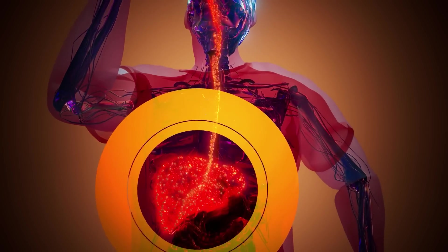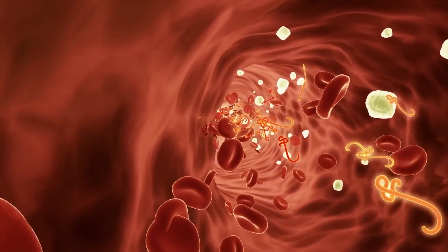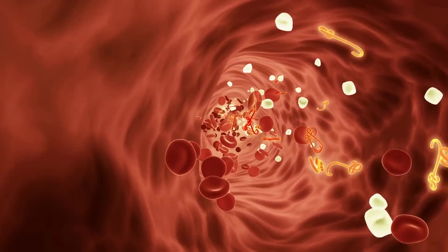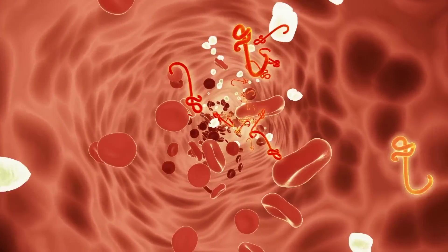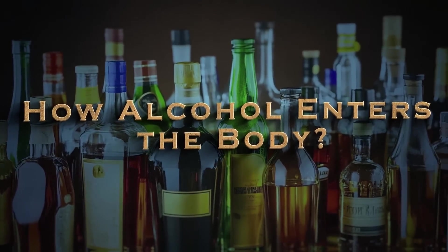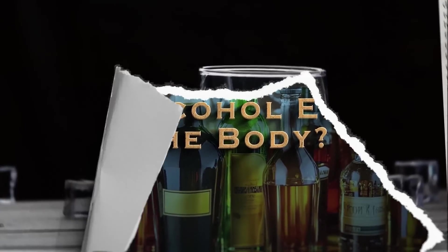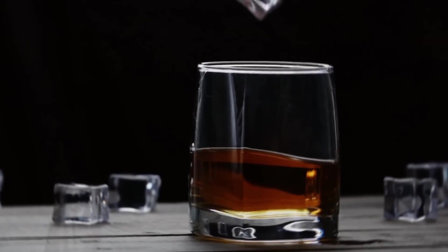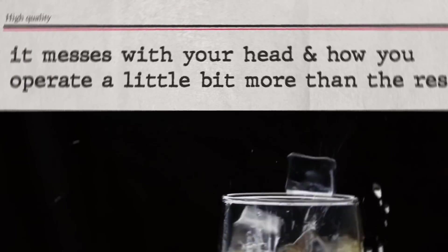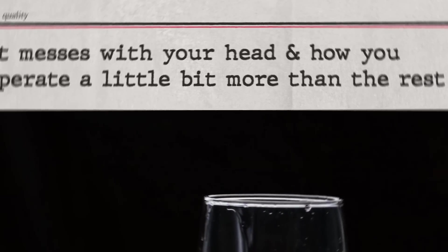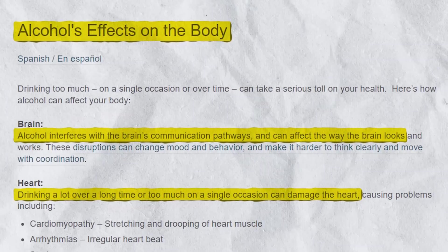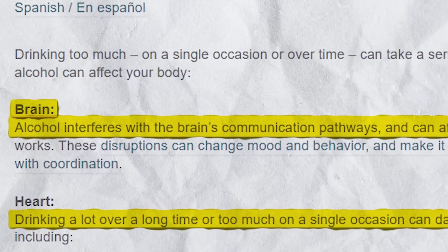Once in the bloodstream, alcohol is carried throughout your body and affects various organs and systems differently. As anyone who's had a little too much alcohol can tell you, it messes with your head more than the rest. One of the primary targets that alcohol affects is the brain.